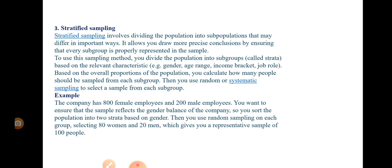Stratified sampling involves dividing the population into subpopulations that may differ in important ways. You divide the population into strata or subgroups, and then collect your sample from those subgroups. This allows you to draw more precise conclusions by ensuring that every subgroup is properly represented in the sample.